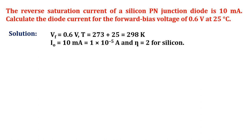Convert that into Kelvin, that is T equals 273 plus 25 which is equal to 298 Kelvin.